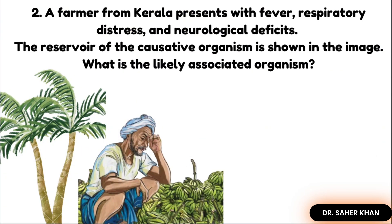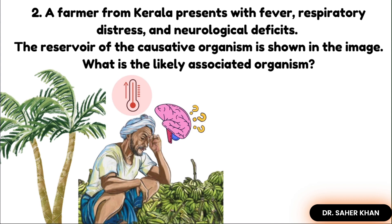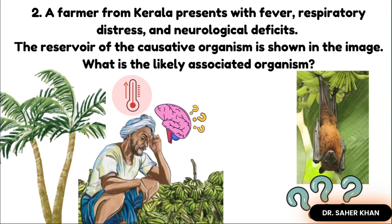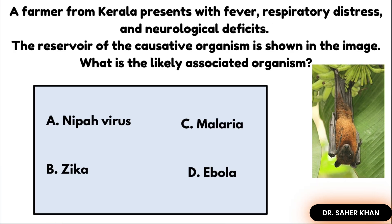Our second question: A farmer from Kerala presents with fever, respiratory distress, and neurological deficit. The reservoir of the causative organism is shown in the image. What is the likely associated organism? The options are Nipah virus, Ebola virus, Zika virus, and malaria.